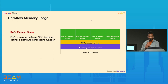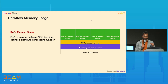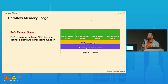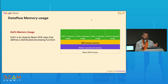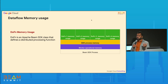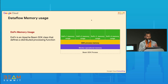The next memory usage comes from the DoFn. A DoFn is a Beam SDK class used to define a distributed processing function — this is where your processing logic lives. If your pipeline is memory intensive, that should typically be the maximum usage of worker memory.